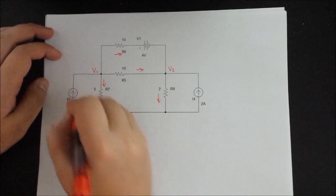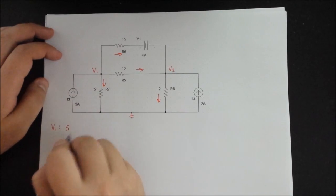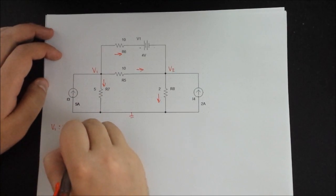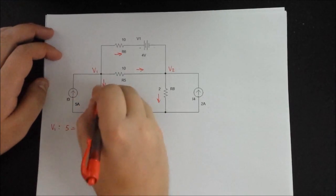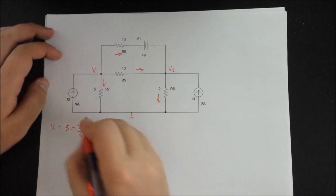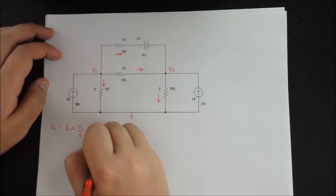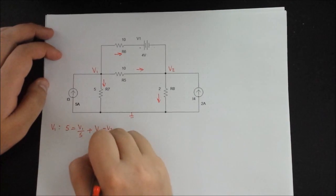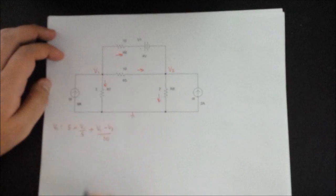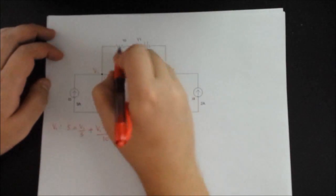Alright, so I'll start writing the equation. So at V1, you have the current source that's coming in. So 5 is coming in, and it's equal to V1 divided by 5. It's V1 minus 0, so just V1. Plus V1 minus V2 divided by 10. This is the middle current. And in this case,